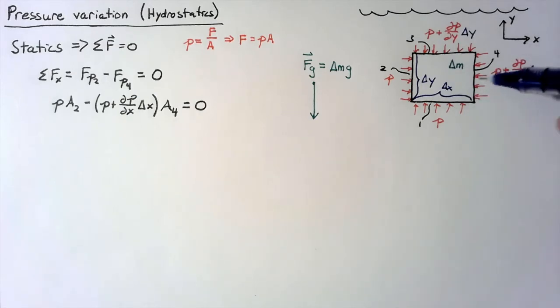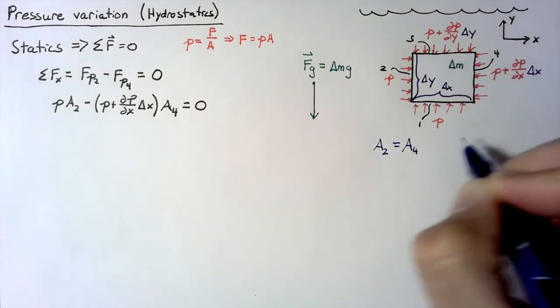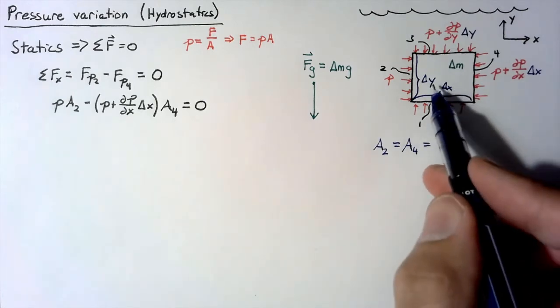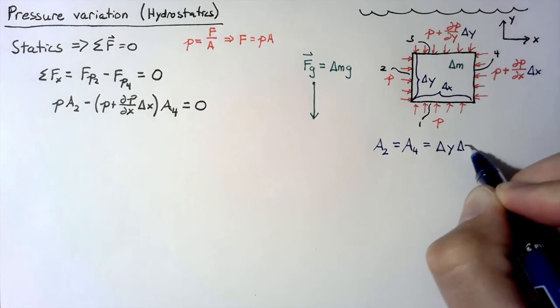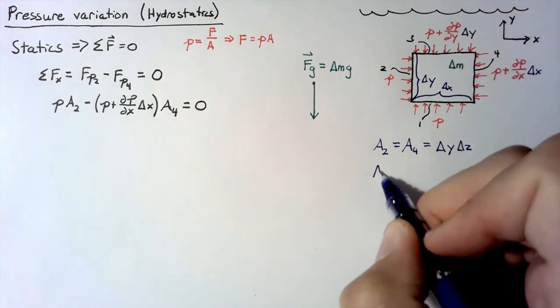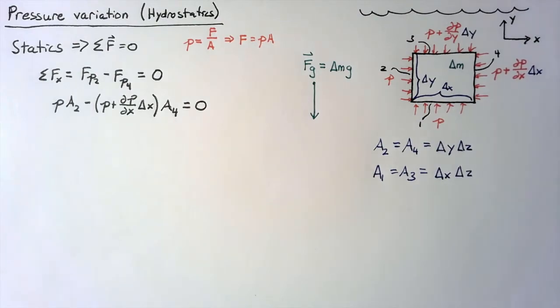So the area of this face 2 is going to be the same as the area of face 4, and that's going to be equal to delta y multiplied by delta z into the page. And for face 1 and 3, this is simply delta x times delta z.